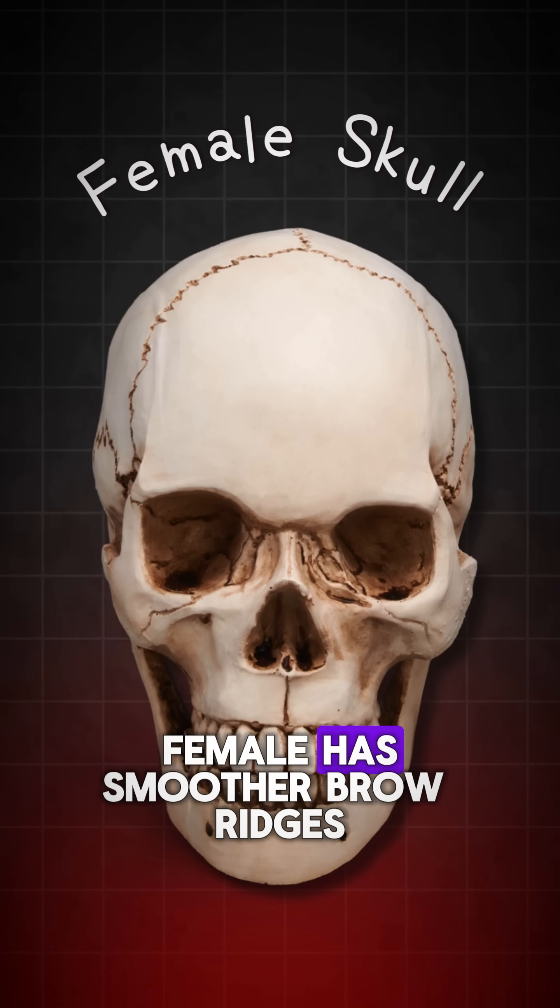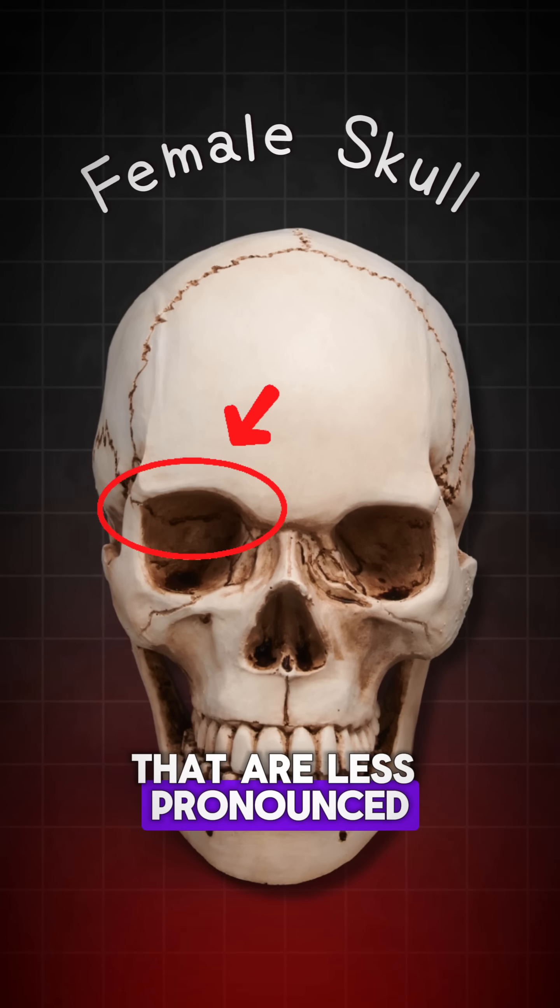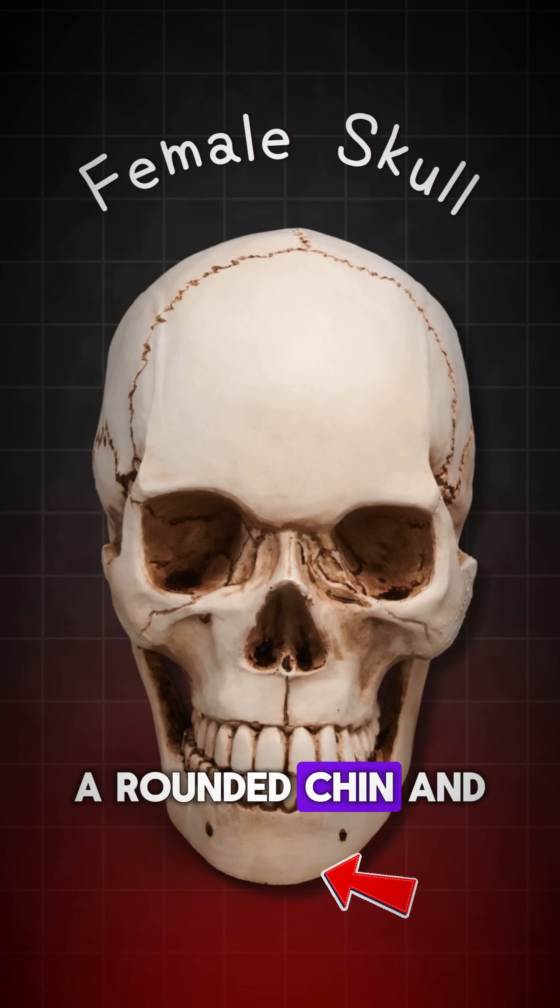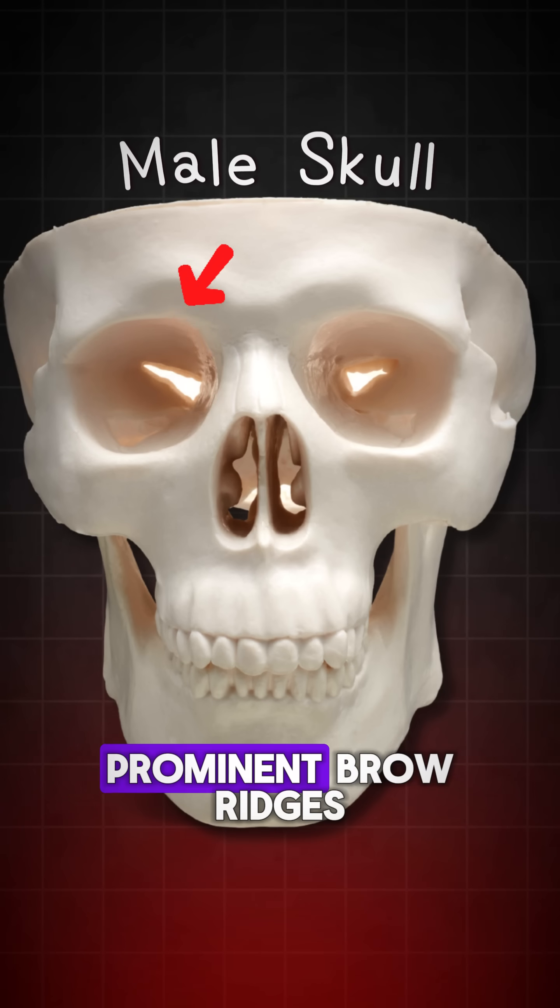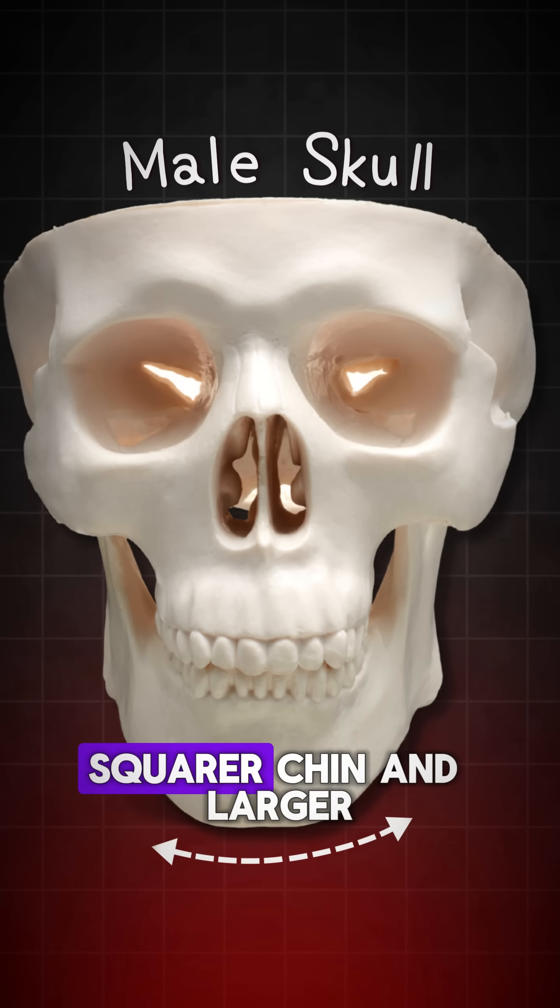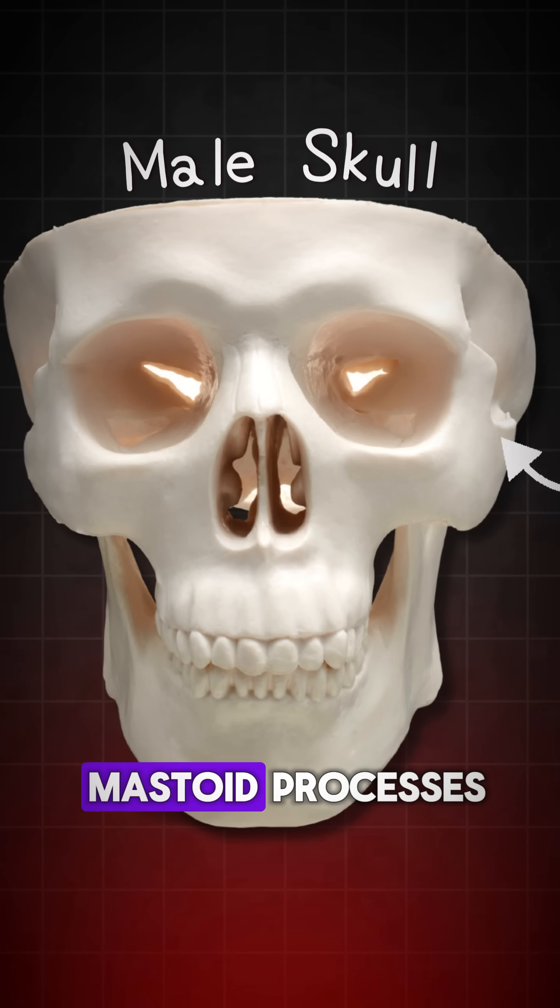The skull of a female has smoother brow ridges that are less pronounced, a rounded chin, and smaller mastoid processes, whereas males have more prominent brow ridges, a squarer chin, and larger mastoid processes.